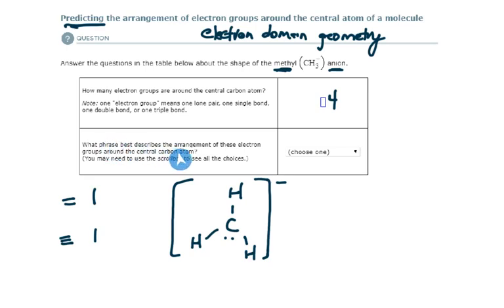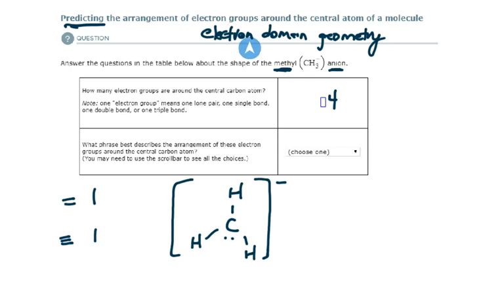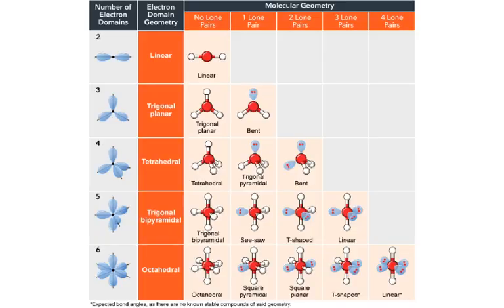The next question is: what phrase best describes the arrangement of these electron groups around the central carbon atom? If you look at the PowerPoint slides or the explanation in Alex, you will see that the number of electron domains tells you what the geometry of those electron domains is likely to be. If there are two electron domains, it'd be linear. If there are three electron domains, it'd be trigonal planar — the shape of a triangle on one plane. In this case, with four electron domains around the central carbon atom, the electron domain geometry is tetrahedral.